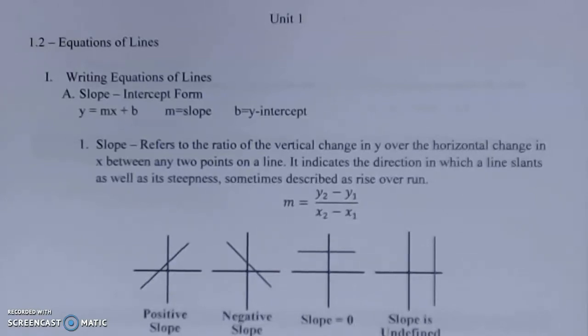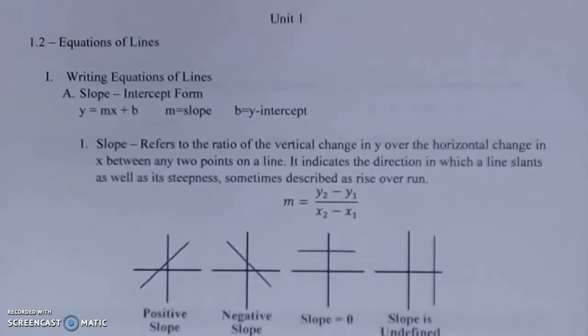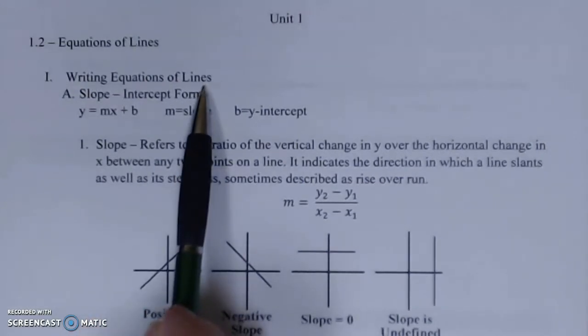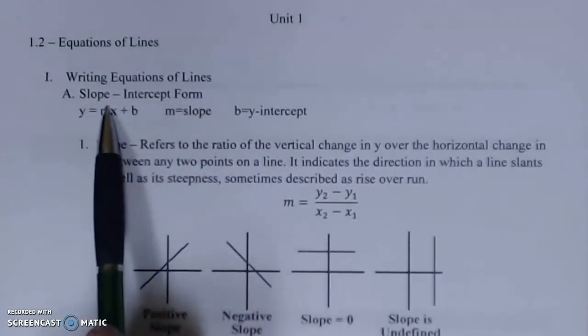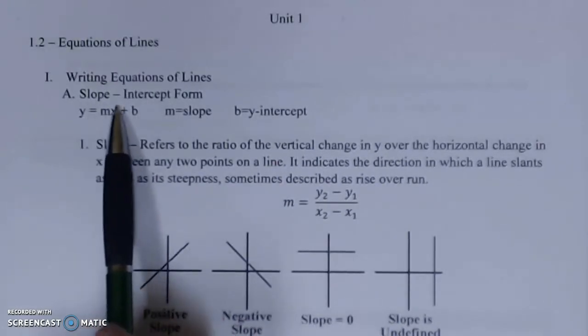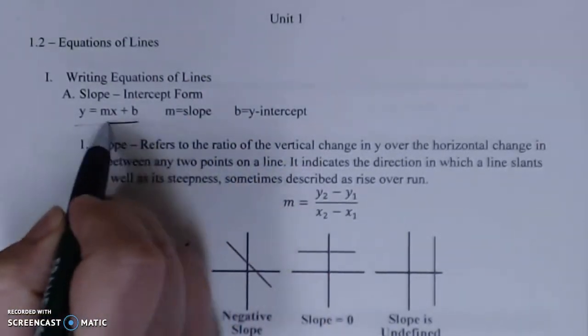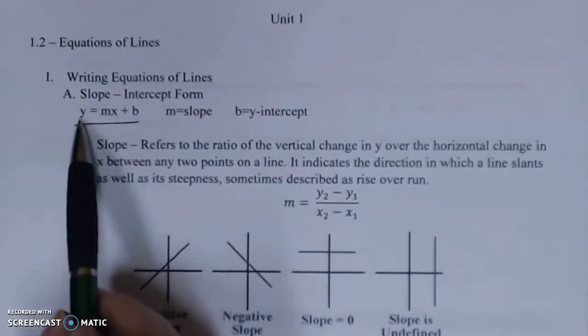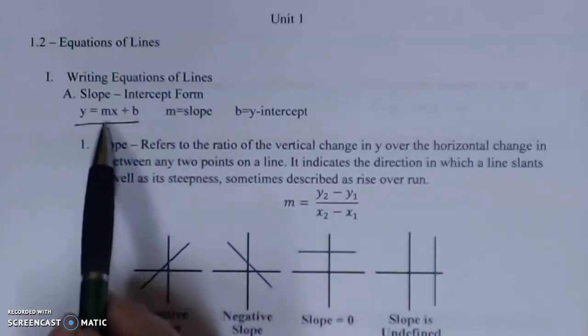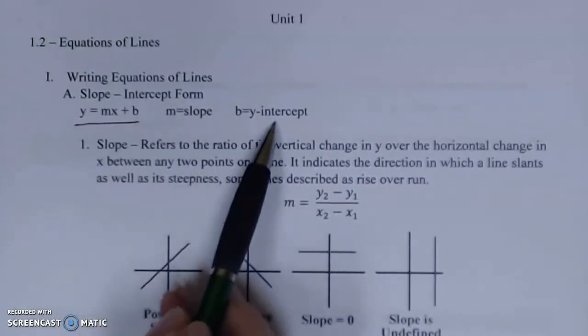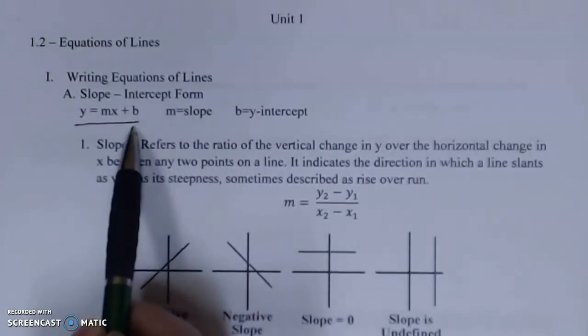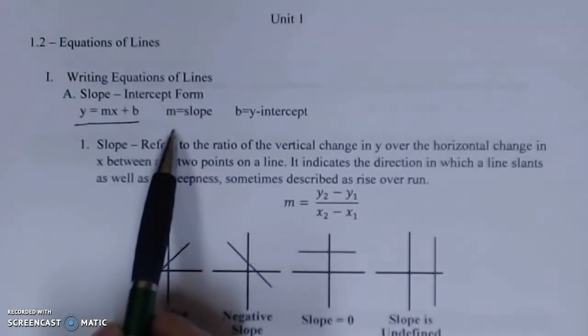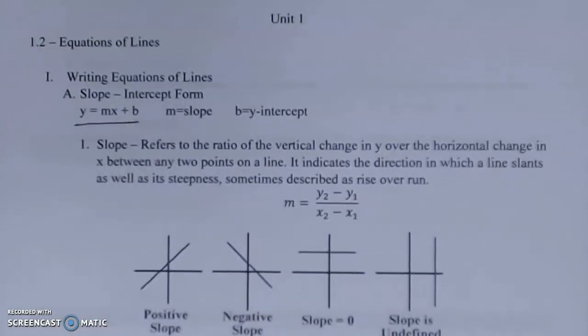For this section we're going to be looking at equations of lines. To get us started we want to look at writing equations of lines and we're going to have a few different ways that we do this. The first approach is slope-intercept form. This is y equals mx plus b where y is by itself, m is your slope, and b is your y-intercept. First let's take a more in-depth look at our idea of slope before we move forward with this form.